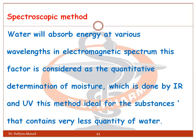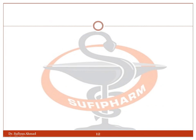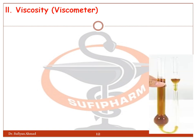The spectroscopic method relies on the fact that water absorbs energy at various wavelengths of the electromagnetic spectrum. This factor is used for quantitative determination of moisture, done by IR and UV spectroscopy. This method is ideal for substances that contain very small quantities of water.